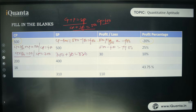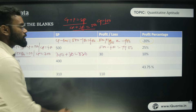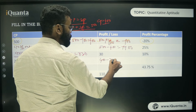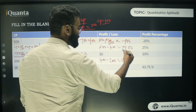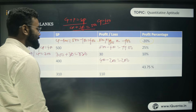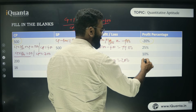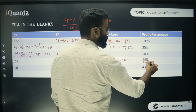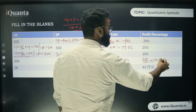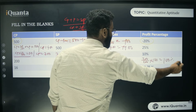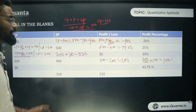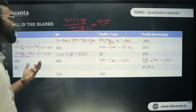Fourth case: CP = 200, SP = 400. Profit = 400 − 200 = 200. Profit% = (200/200) × 100 = 100%. So he made exactly 100% profit.